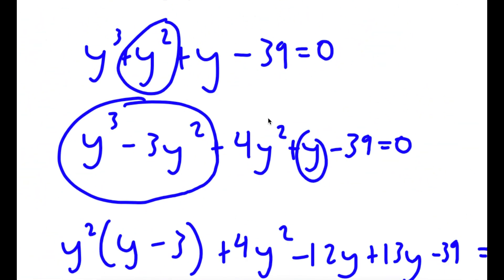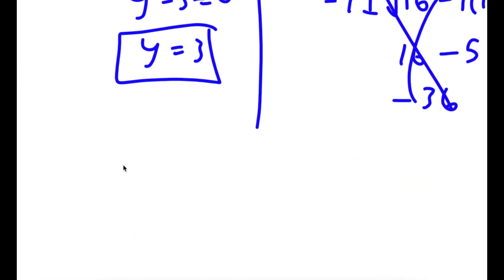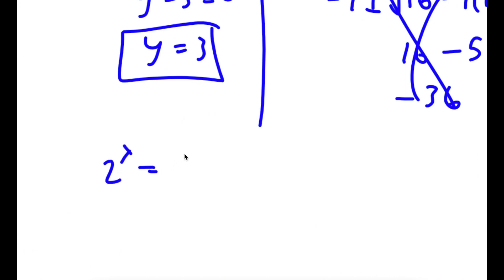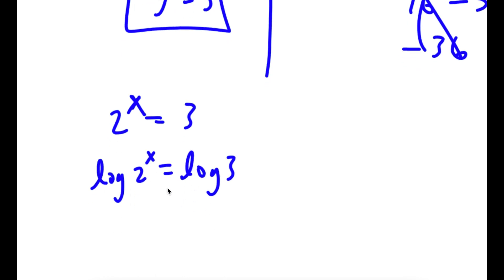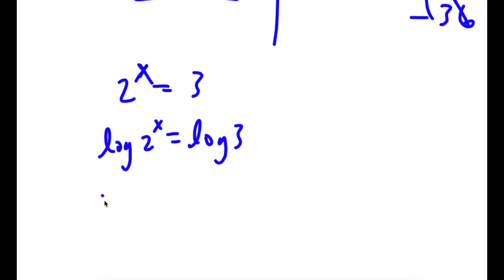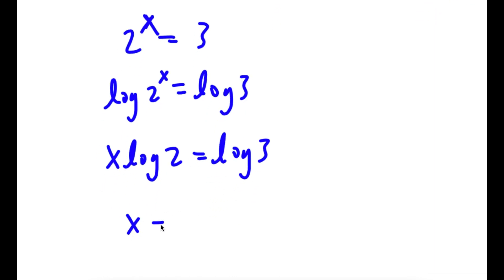Remember how we let 2 to the power of x equal y, meaning 2 to the power of x equals 3. To solve this, I'm going to take the log on both sides. This is the same thing as x times log 2 is equal to log 3, meaning x is equal to log 3 over log 2.